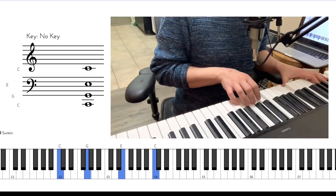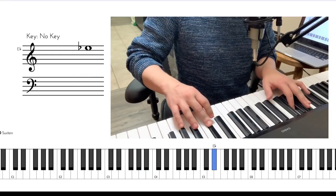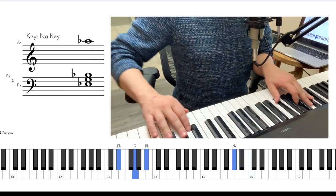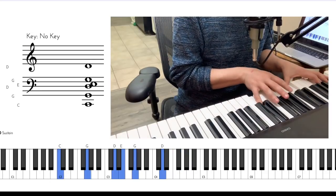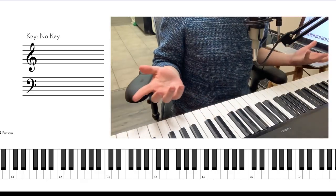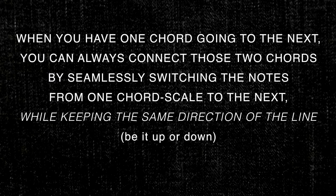You can start from C or from any note — let's start from E. Now apply this to 'Autumn Leaves,' apply this to 'All the Things You Are,' apply this to 'Giant Steps,' apply this to any song. It doesn't matter what the chord changes are. When you have one chord going to the next, you can always connect those two chords by seamlessly switching the notes from one chord scale to the next and keeping the same direction of the line, be it up or down. That's how you get that fluidity in your lines, regardless of what chords you happen to be improvising over.